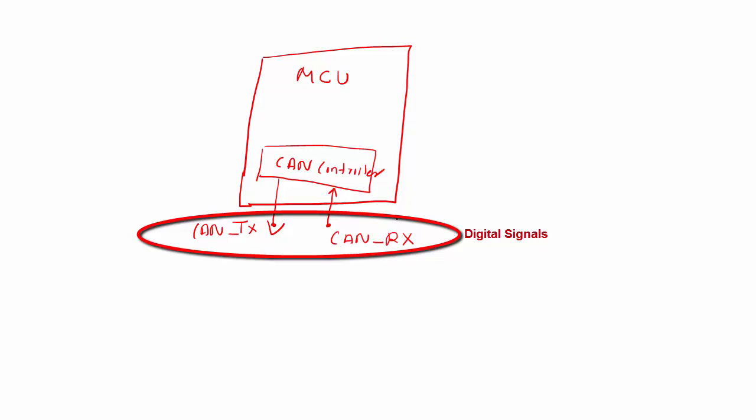So that's why there is a need to convert these single-ended signals to differential signals. And I will talk more about those differential signals in the next video. And in order to achieve that differential signals, you need a transceiver, a CAN transceiver. That's why a CAN transceiver is used after this.